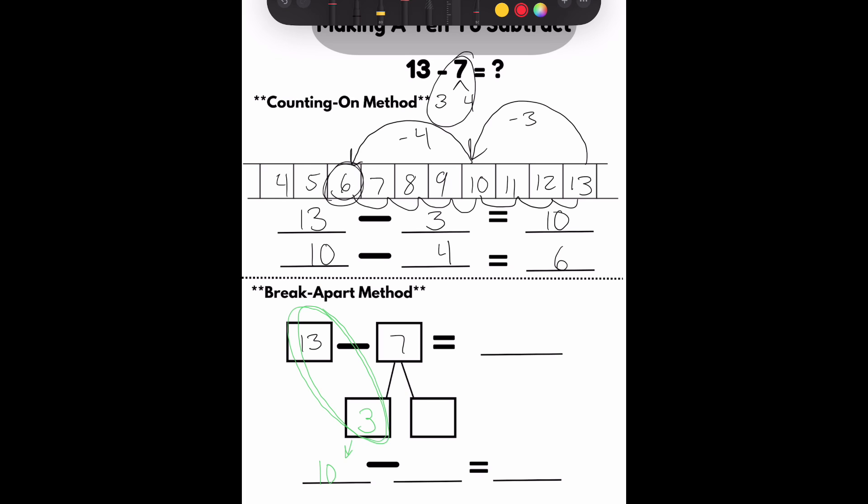If I look at that number bond, 7 minus 3 equals 4. This is my missing number, 4. So I bring it down. Finishing that bottom equation, 10 minus 4 will equal 6. So that means 13 minus 7 equals 6.